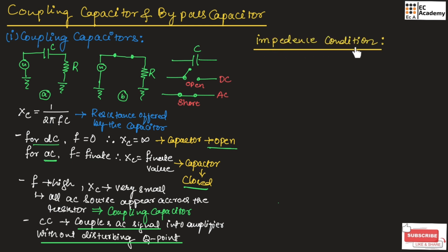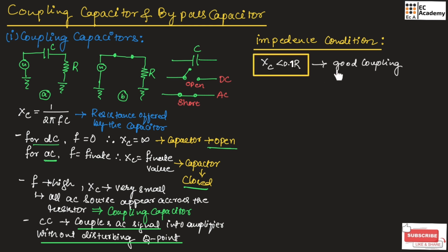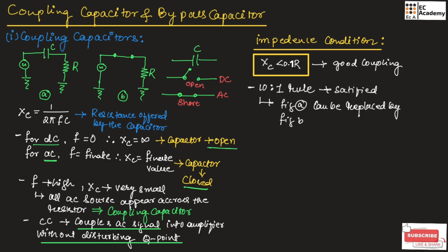Now let us see the impedance condition for a coupling capacitor. The capacitor's reactance must be very much smaller than the resistance at the lowest frequency of the AC source. This reactance should be 10 times less than the resistance, so we can write Xc should be less than 0.1 times R. This is the condition for good coupling — the reactance must be 10 times smaller than the resistance at the lowest frequency of operation. When this 10-to-1 rule is satisfied, figure A can be replaced by figure B.